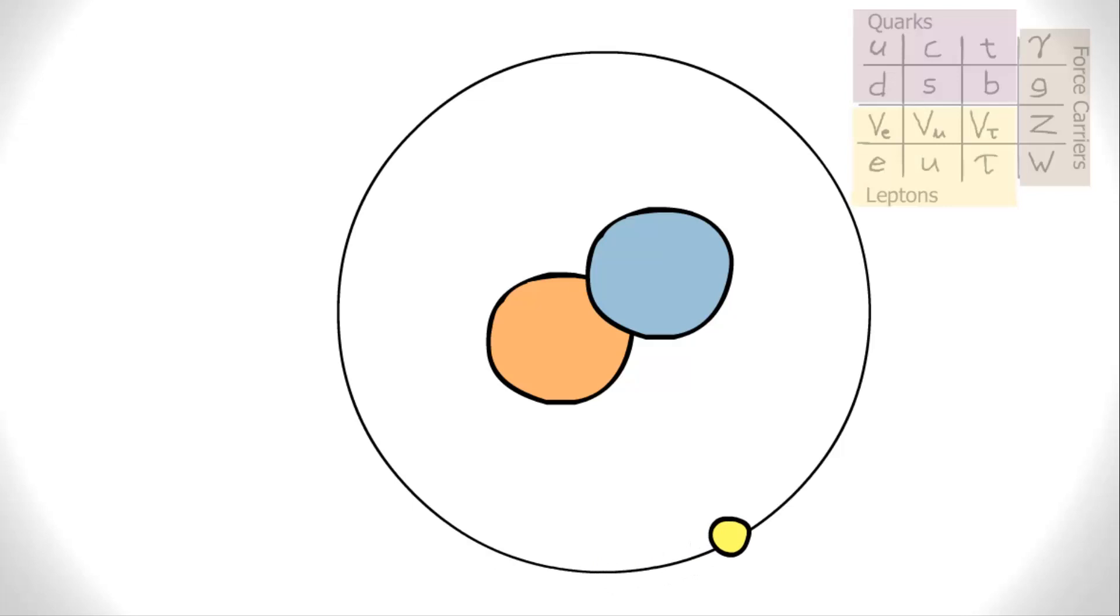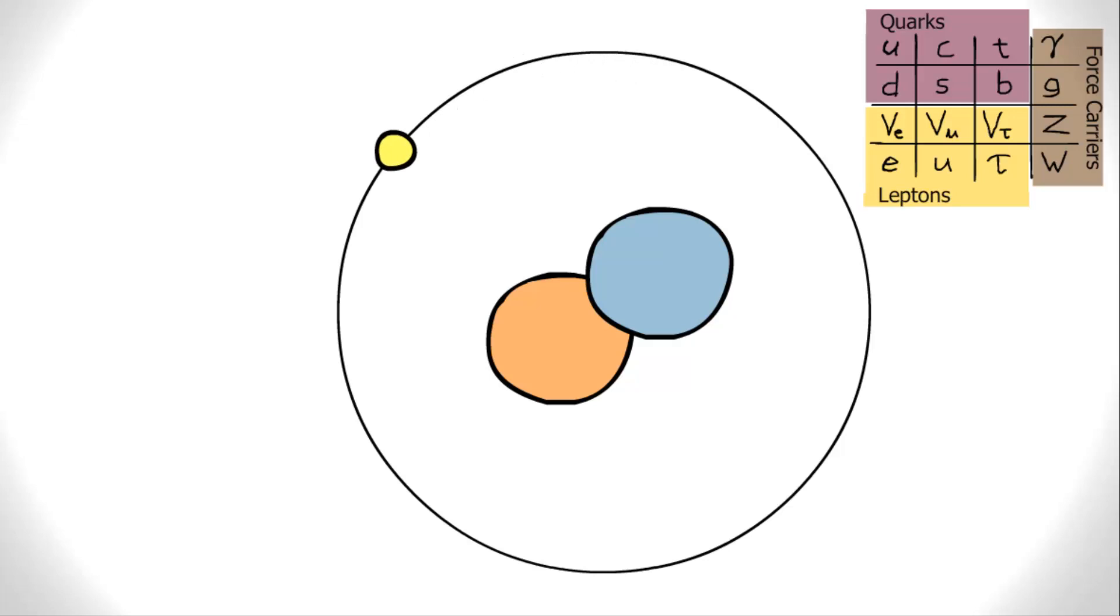According to the Standard Model of Physics, the world is made up of quarks, leptons, and force carriers.